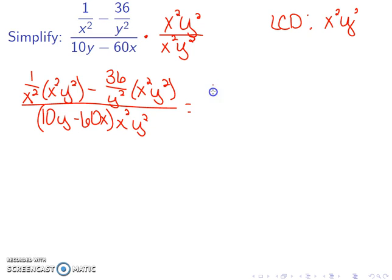Multiplying the first fraction gives me y squared. Multiplying the second one gives me minus 36x squared. Multiplying the bottom gives me 10x squared y cubed minus 60x cubed y squared.